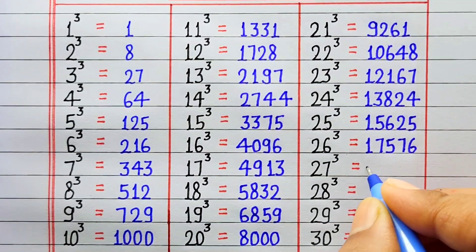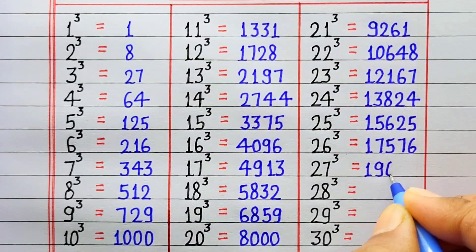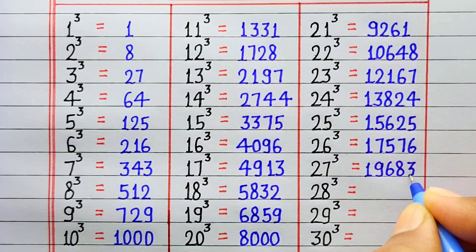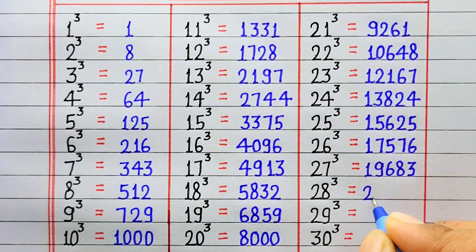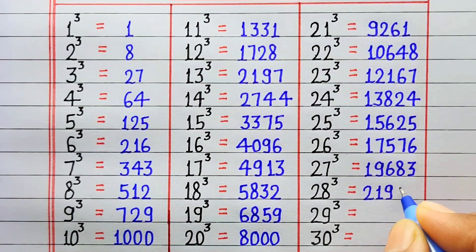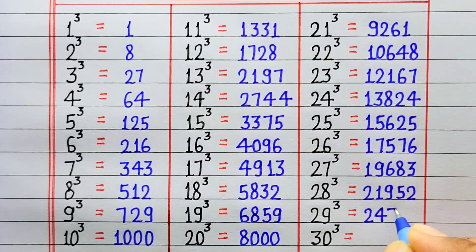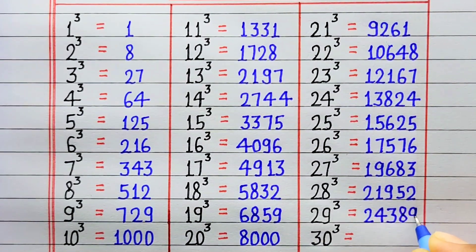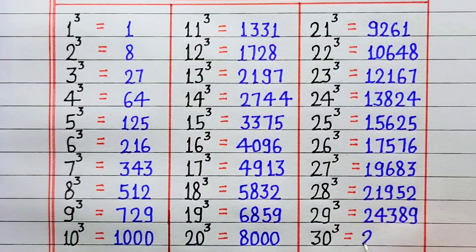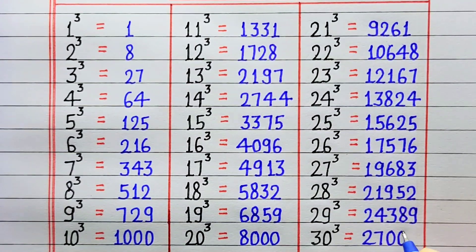Cube of 27 is 19683. Cube of 28 is 21952. Cube of 29 is 24389. Cube of 30 is 27000.